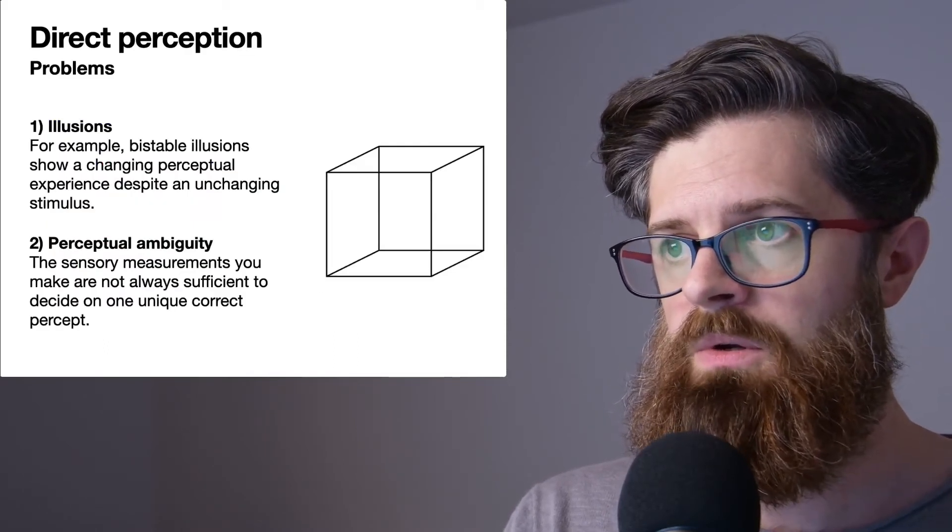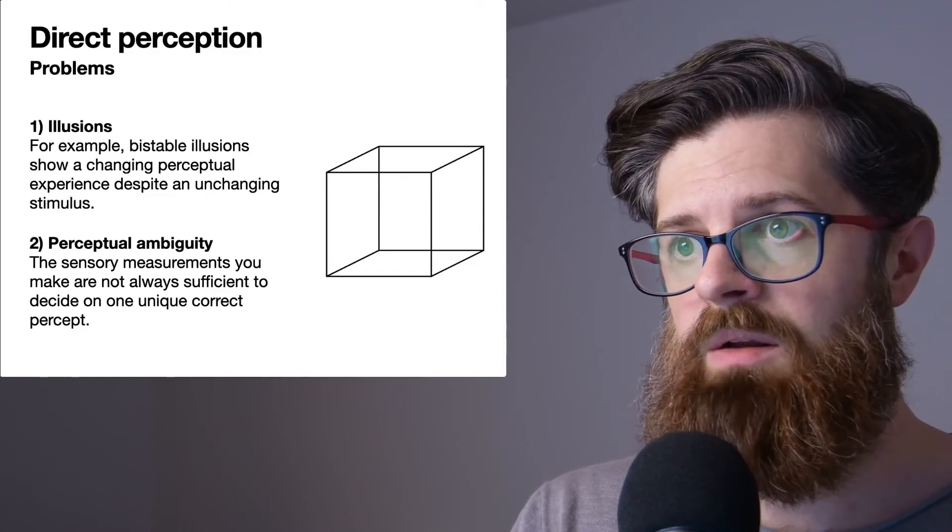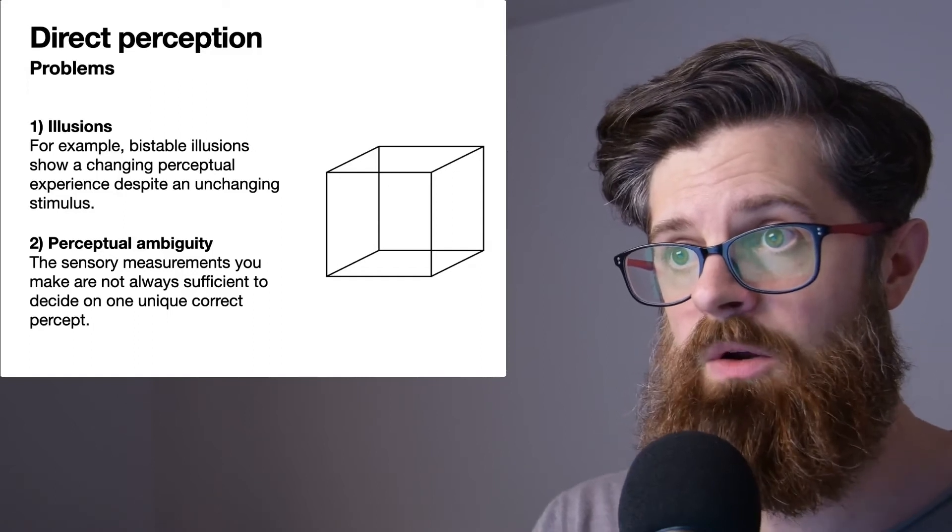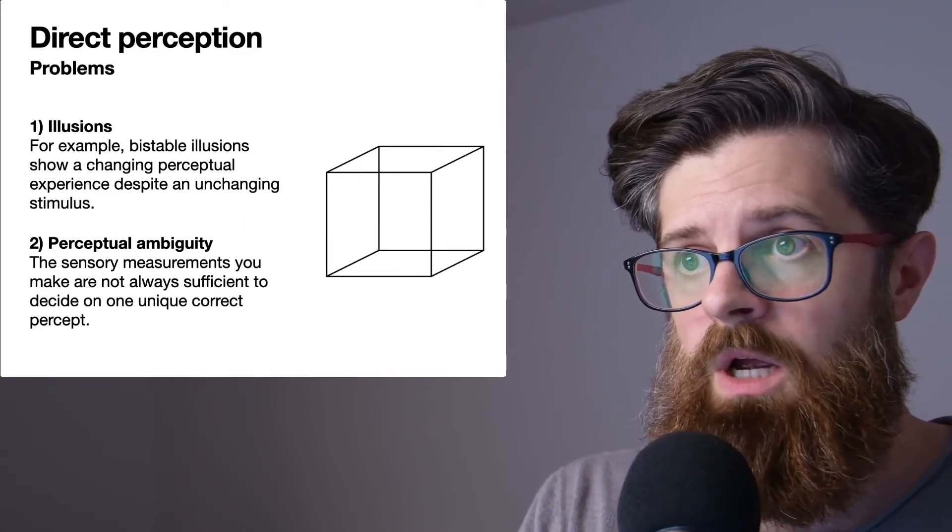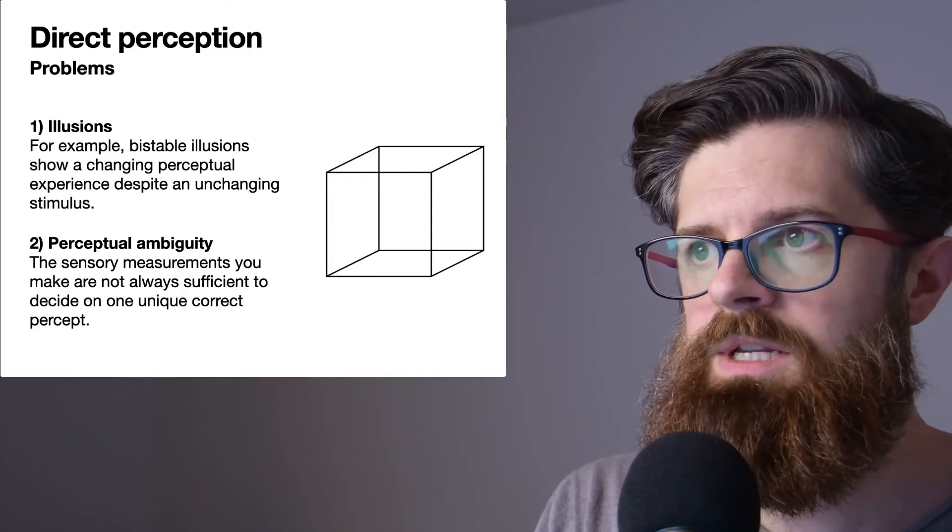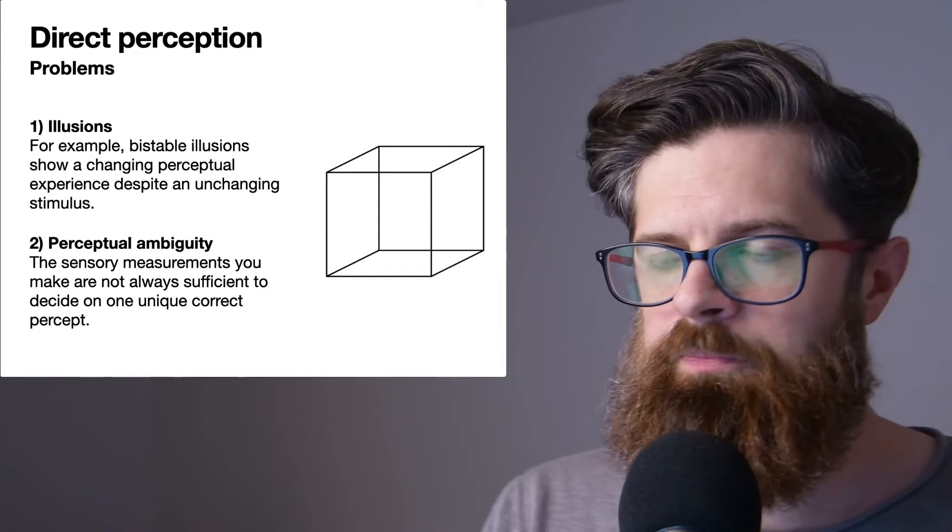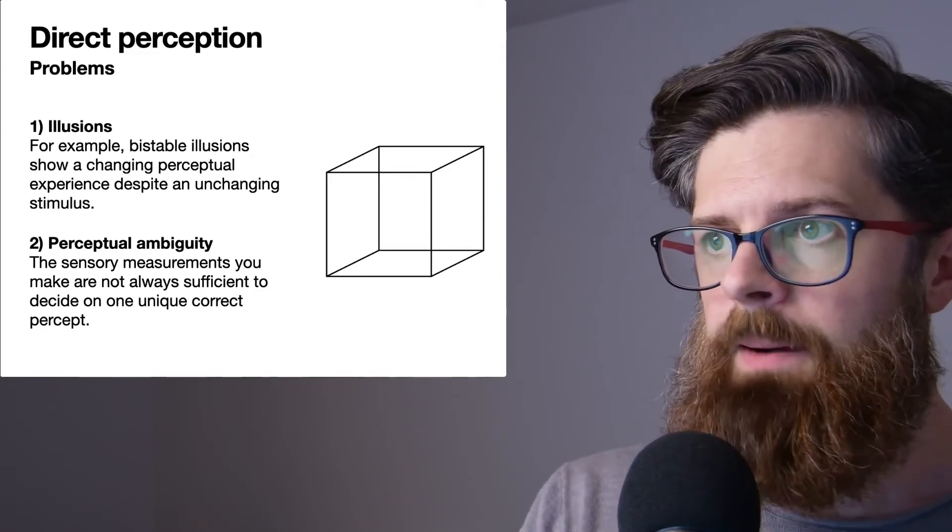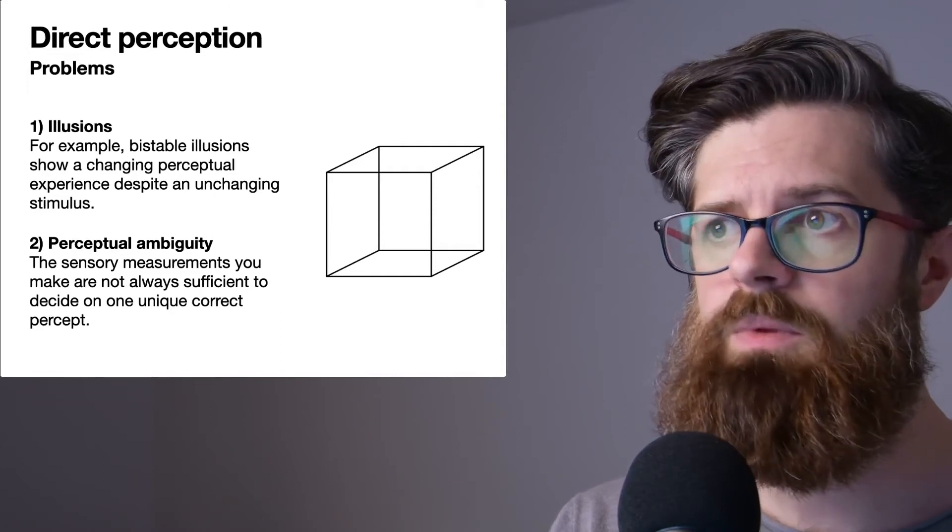Now there are two clear problems here, and they're related in fact. One of them is the fact that illusions exist. On the side here I've shown a Necker cube, and if you stare at this long enough, you'll find that your perception of the three-dimensional nature of this cube might flip. Over time you might realize that there are two stable perceptions that you can have of this stimulus. This is not only interesting but concerning for the direct perception approach because the stimulus here is not changing, so I should perceive something which is not changing either. But my perception is changing while the stimulus is unchanging, and so that doesn't quite fit with the predictions of direct perception.